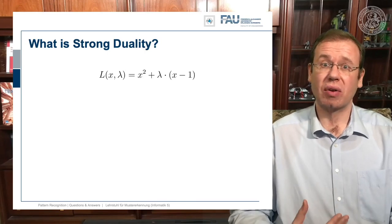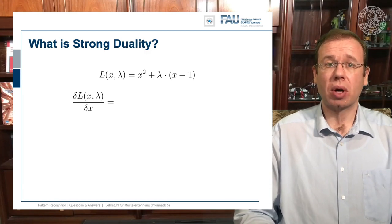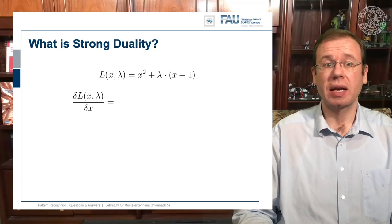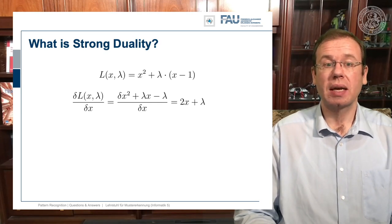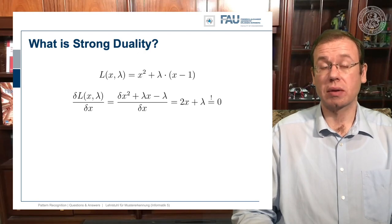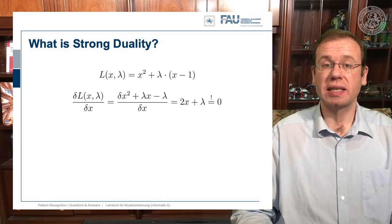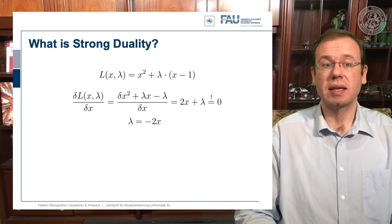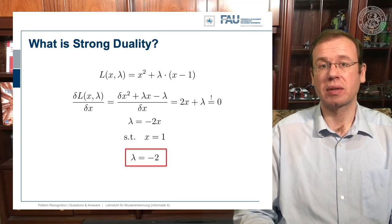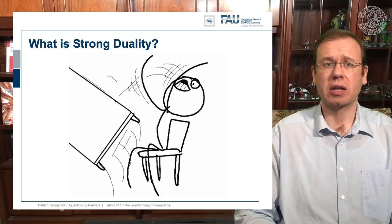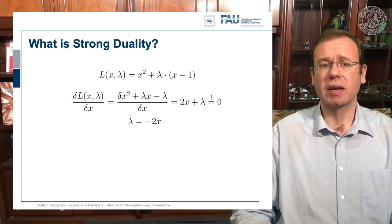Now let's look into strong duality. We compute the partial derivative of our Lagrangian with respect to x. We need to multiply lambda into the bracket, and then it's easy to compute: the partial derivative with respect to x is simply 2x plus lambda. This is supposed to be zero at a critical point. Setting it to zero and solving for lambda: given our constraint x equals 1, this results in lambda equals minus two.